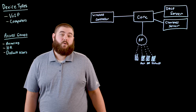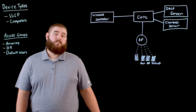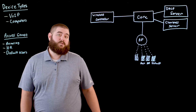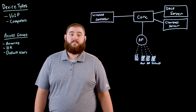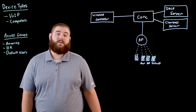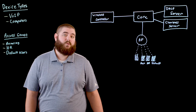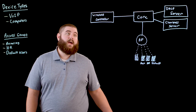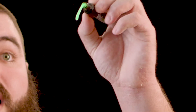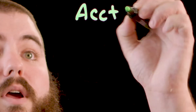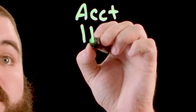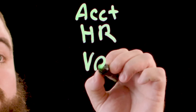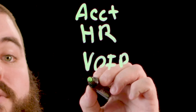So first let's look at role-based access. On the Aruba Wireless controllers we have the ability to assign user roles to end devices. This can be done to assign a VLAN to a particular device or control access for that device. So we may have a user role for accounting, a separate one for HR, one for voice phones, and one for PCs.